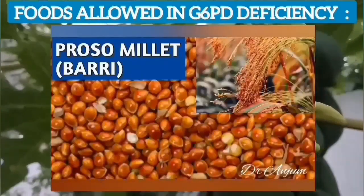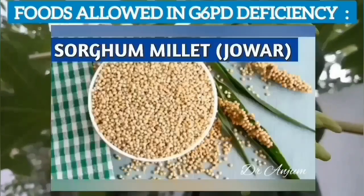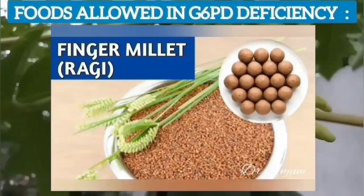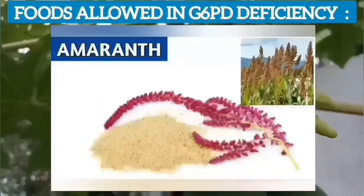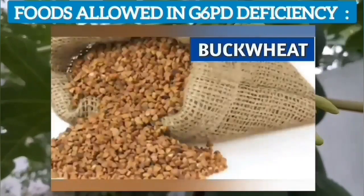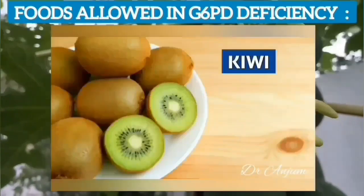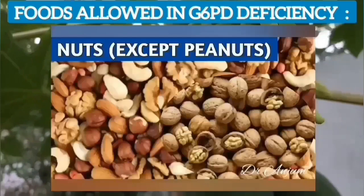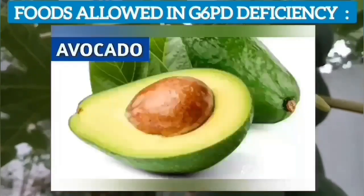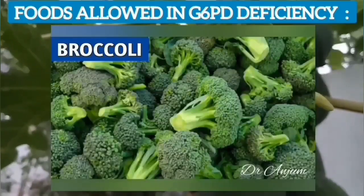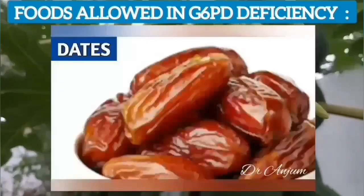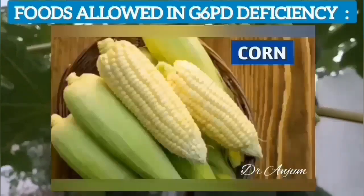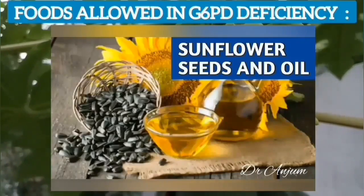Pearl millet, proso millet, kodra, sorghum millet, little millet, finger millet, foxtail millet, amaranth, buckwheat, barnyard millet, kiwi, Brussels sprouts, beetroot, nuts except peanuts, avocado, broccoli, parsley, dates, oranges, artichokes, and corn are all allowed.